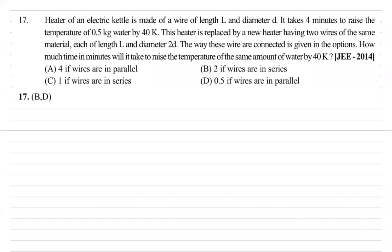Question number 17: A heater of an electric kettle is made of a wire of length L and diameter d. It takes 4 minutes to raise the temperature of 0.5 kg water by 40 Kelvin. This heater is replaced by a new heater.